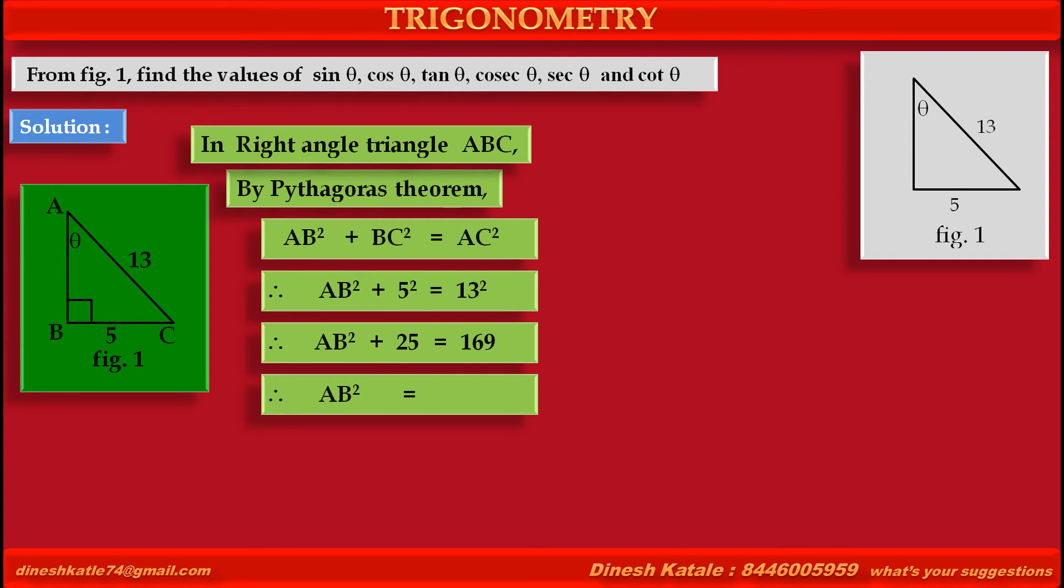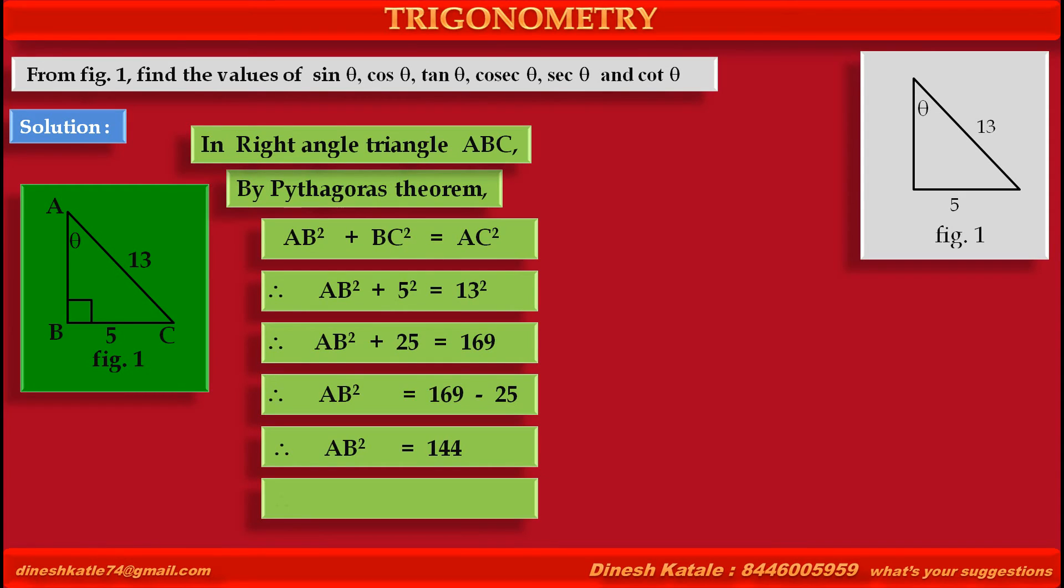Therefore, we get AB square is equal to 169 minus 25. Therefore, AB square is equal to 144. Therefore, by taking square root on both the sides, we get AB is equal to 12.